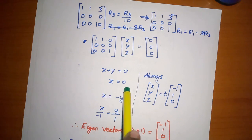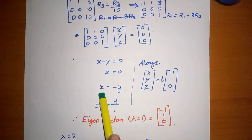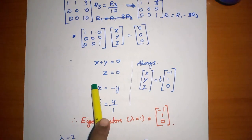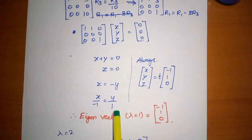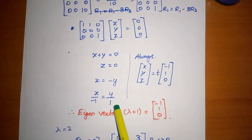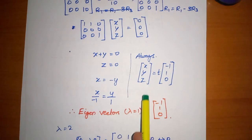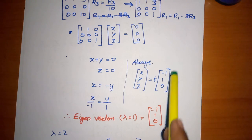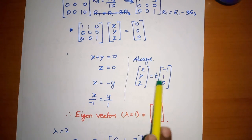From the third row, z equals zero. From the first row, x plus y equals zero, so x equals minus y. Setting y as the free parameter: x divided by minus 1 equals y divided by 1. So x equals minus 1, y equals 1, z equals zero. The eigenvector for lambda equals 1 is x, y, z equals t times [minus 1, 1, 0].